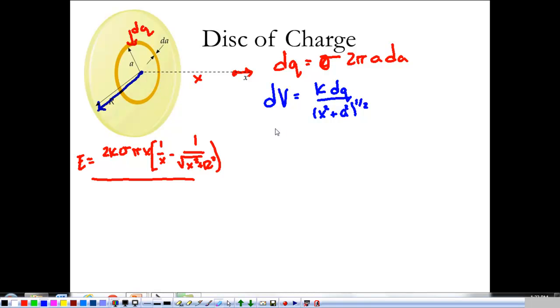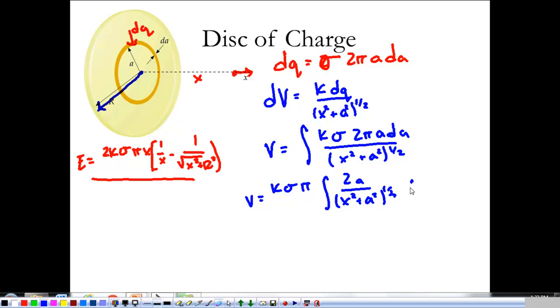The same idea that we did with the electric field, we're going to integrate both sides and plug in our DQ. So we have the integral of K·σ·2πA·dA over √(X² + A²), and we have a very similar integral to take, K·σ·π times the integral of 2A over (X² + A²)^(1/2) times dA.